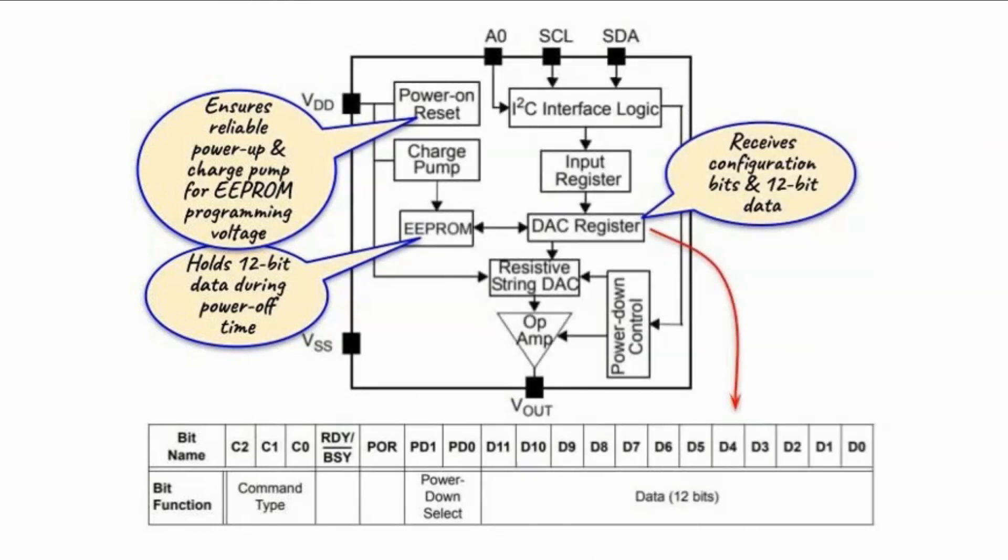A block diagram of the MCP4725 IC is shown here. The two main components are the DAC register and the EEPROM. The DAC register is a 19-bit register that stores the 12-bit data to be converted to analog, and configuration bits made of command bits which determine whether we are accessing the DAC register or the DAC register and the EEPROM. We also have the power-down bits which determine whether the IC is in normal operational mode where the V-output is the analog version of the 12-bit data, or the IC is in power-down mode where V-output is zero.